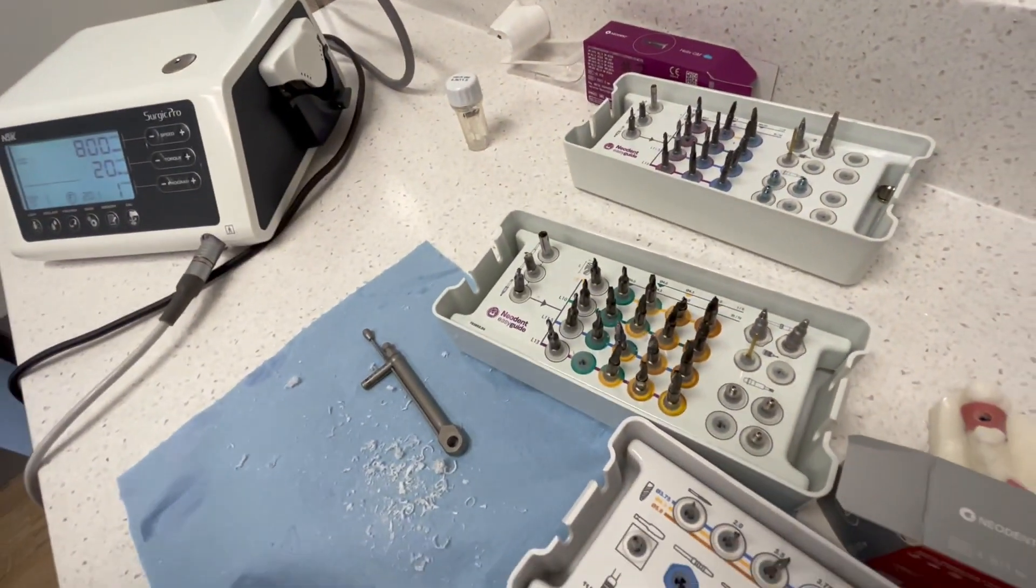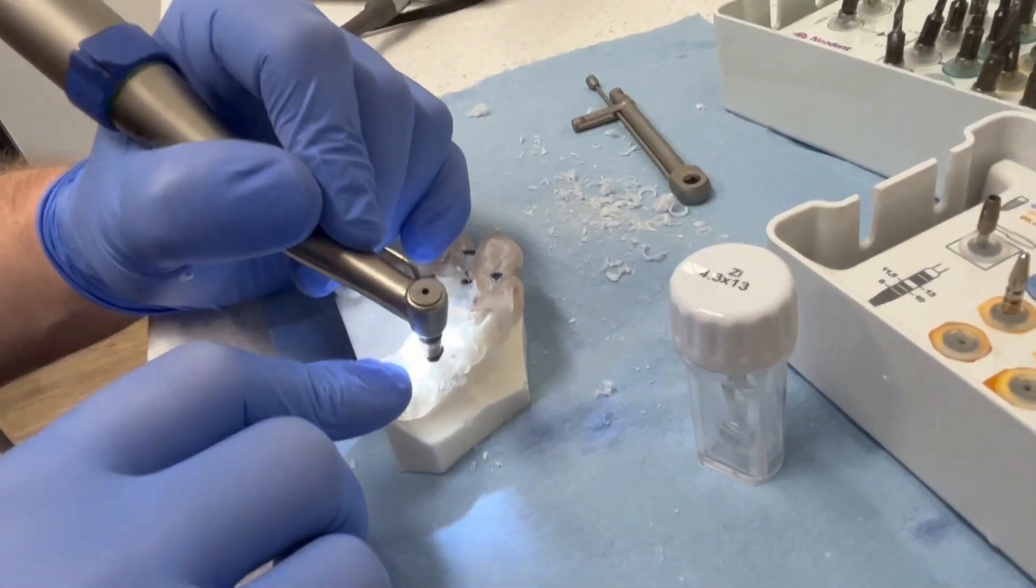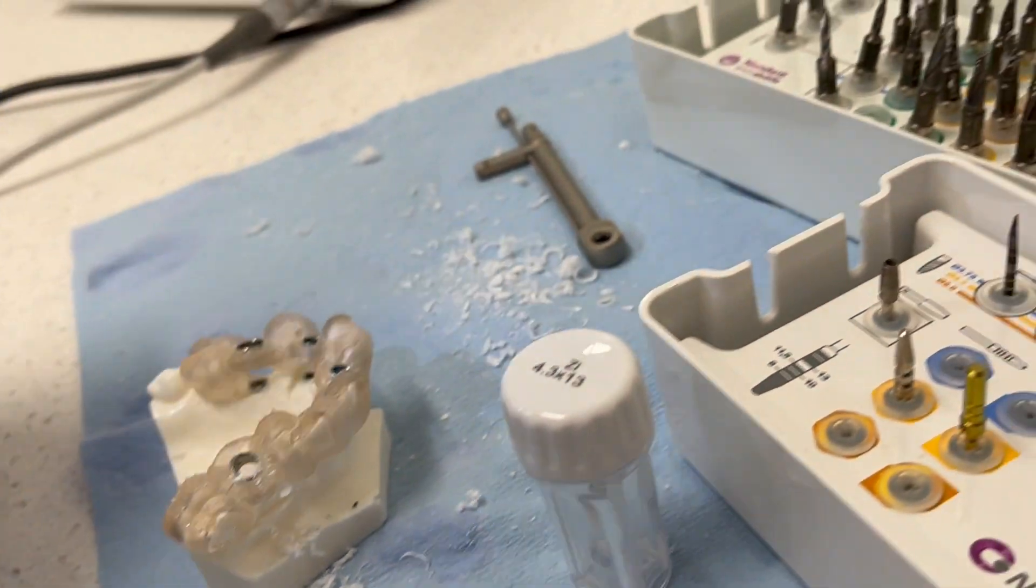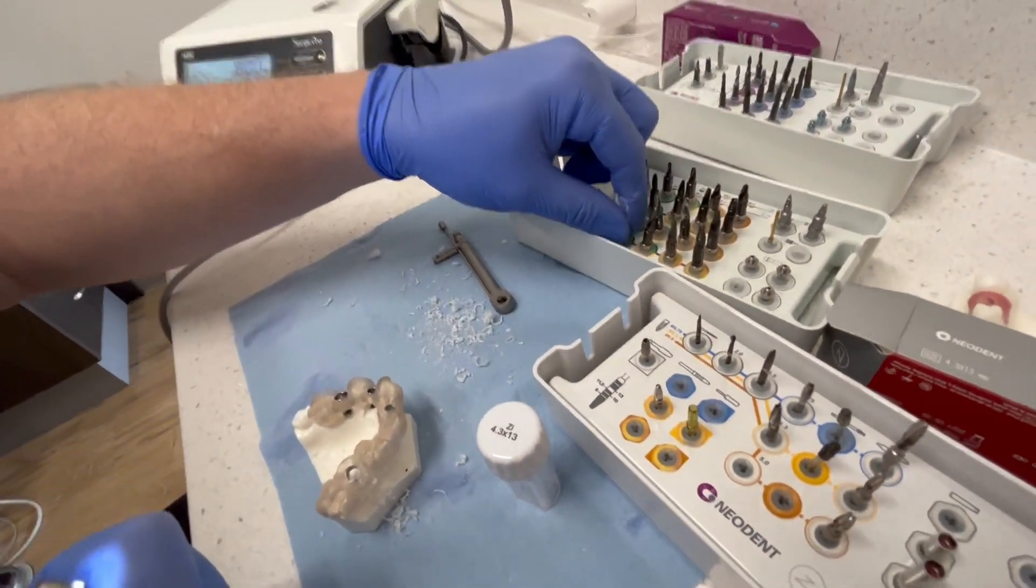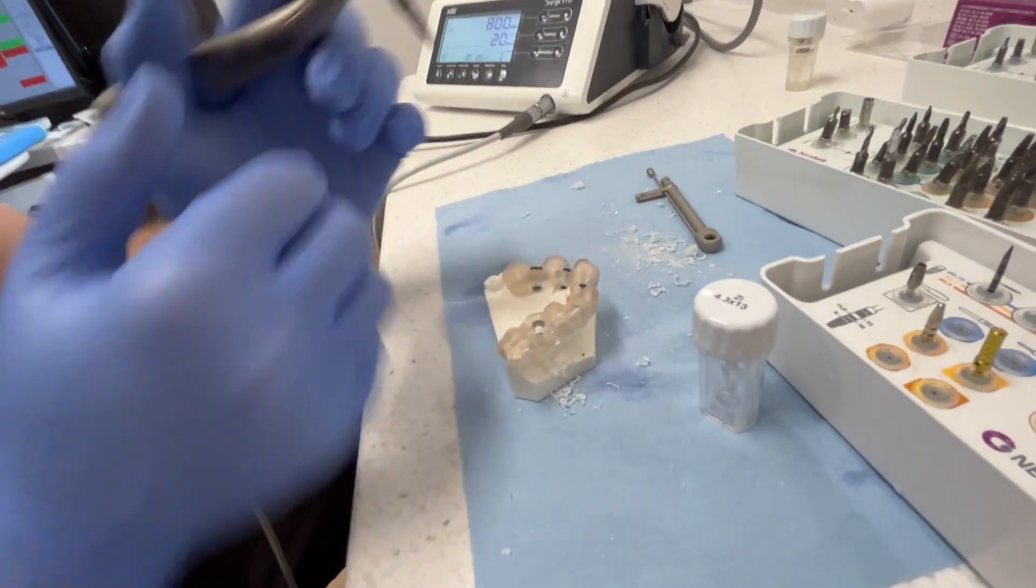Now we're just upsizing. So now this is our 4-0 for soft bone drill. This is our 4-0 for hard bone or 4-3 soft bone.